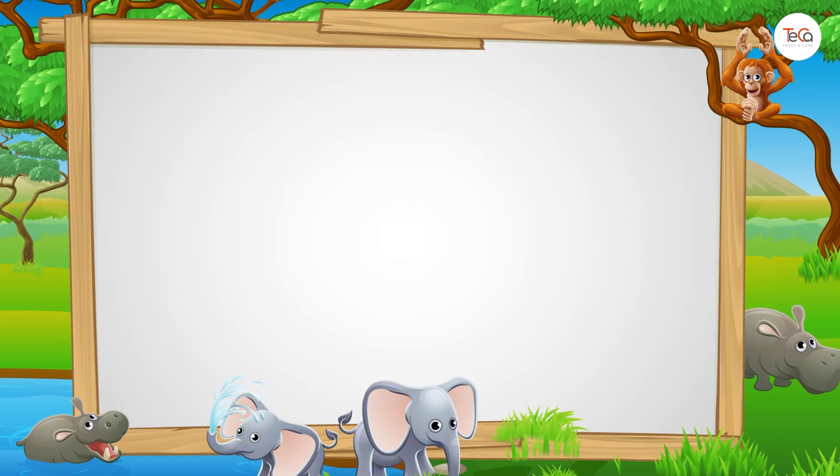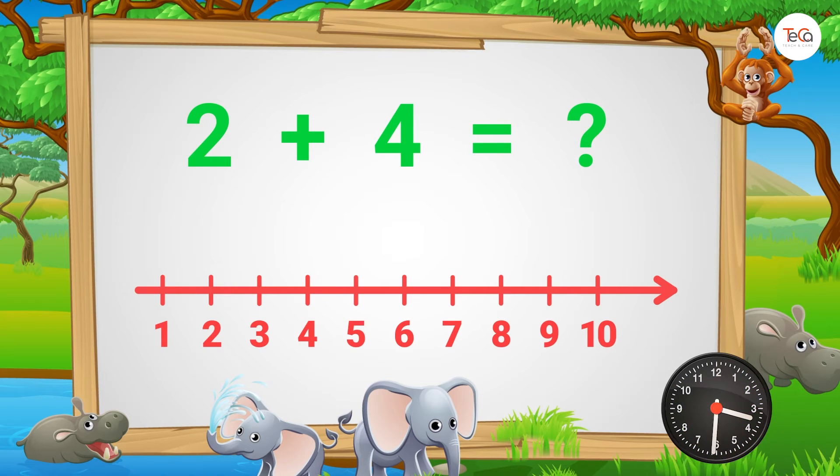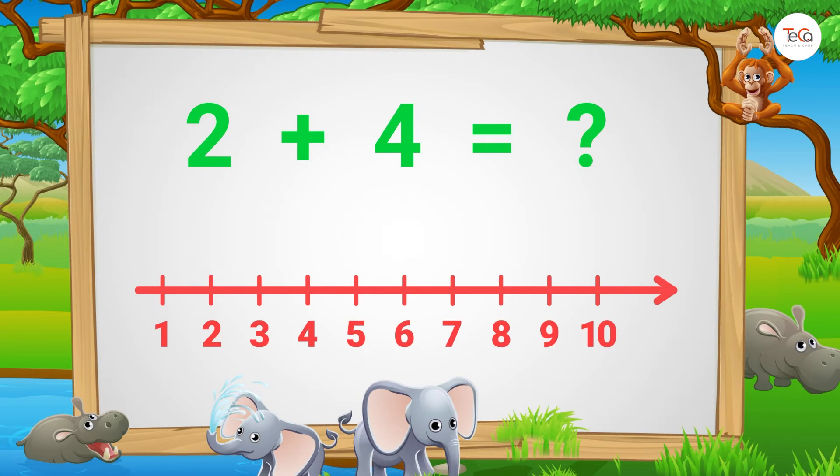Next, to find 2 plus 4, start from number 2. Then jump four numbers to the right. Here, we stop at number 6. So, 2 plus 4 equals 6.